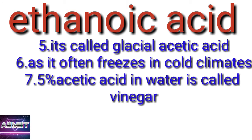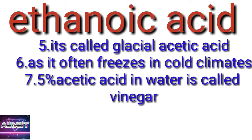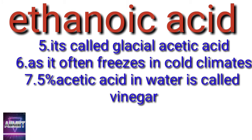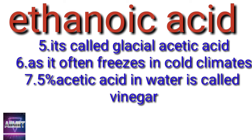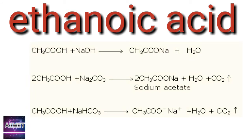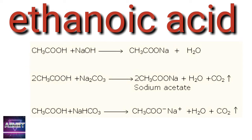Five percent of ethanoic acid in water is called vinegar. Pure ethanoic acid is also called glacial acetic acid because it often freezes in cold climate conditions. Since ethanoic acid is a carboxylic acid and a weak acid, it shows acidic properties — it turns blue litmus to red litmus.